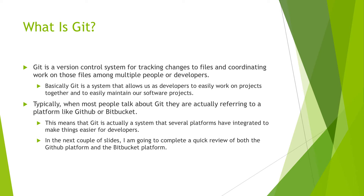Git is a version control system for tracking changes to files and coordinating work on those files among multiple people or developers. Basically, Git is a system that allows developers to easily work on projects together and maintain their software projects. Typically, when most people talk about Git, they are actually referring to a platform like GitHub or Bitbucket — Git is a system that several platforms have integrated to make things easier for developers.